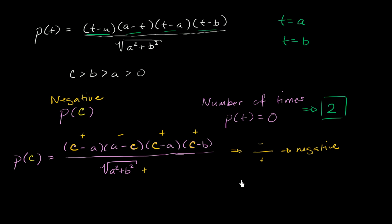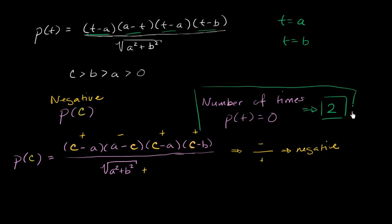So now let's answer our question: what is larger — the number 2, versus some negative number? Well, 2 is larger than any negative number. So the number of times p of t equals 0 is the larger quantity.